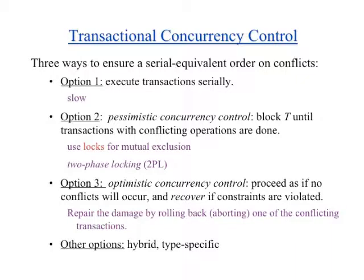The simplest way to get serializable execution is to run transactions one after another — too slow. The other approach is pessimistic concurrency control: two-phase locking. Another possibility is optimistic concurrency control, where you proceed as if nothing is happening — transactional memory uses such a protocol. The system then checks whether conflicts have happened; if no conflict, everything is fine; if conflict, one transaction aborts and is redone. There are also combinations and type-specific concurrency control.